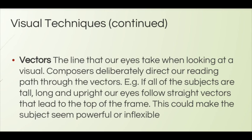Vectors are the lines that our eyes take when we look at an image. If you think of ten very tall straight pine trees in a row, the vectors are vertical lines going up and down. If you're looking at sand dunes rippling across a photo, the vectors are going horizontally across the page. Composers always put everything in deliberately — if it's an artistic piece, everything is either in there or not in there for a reason. The vectors are the way the composer wants you to look — up or down, or across.